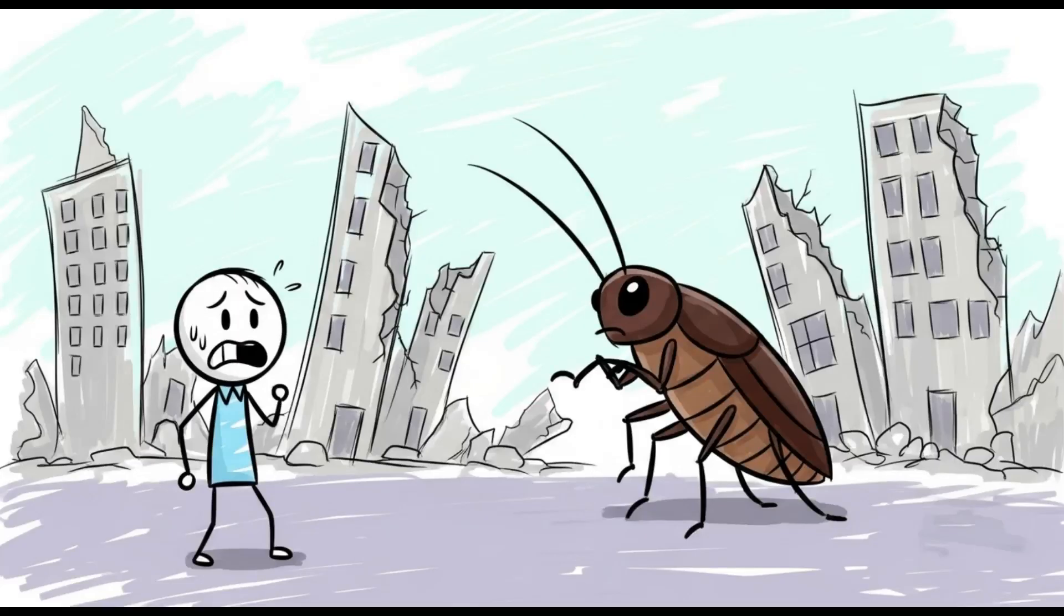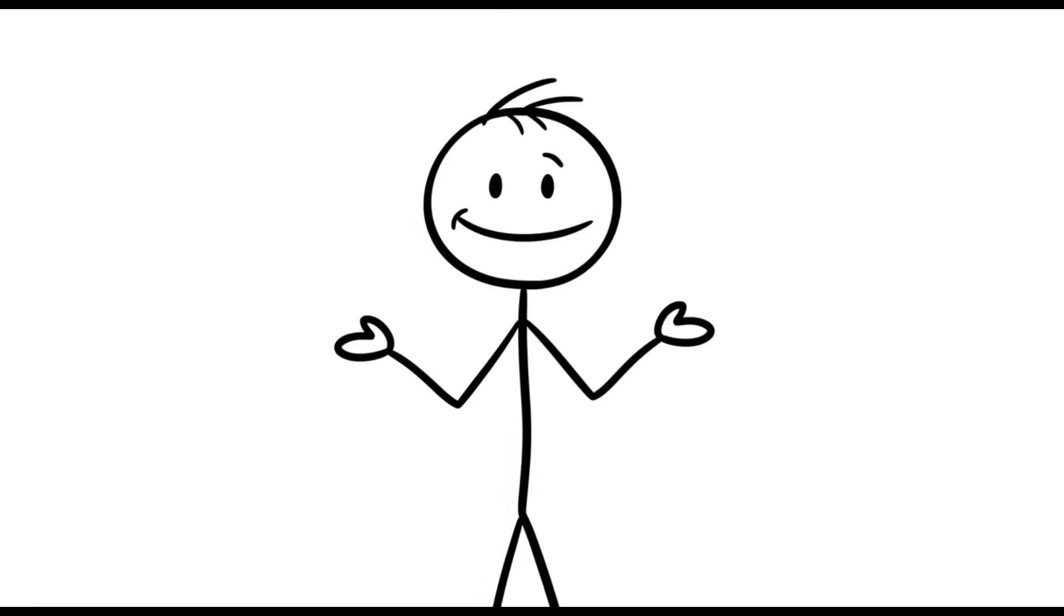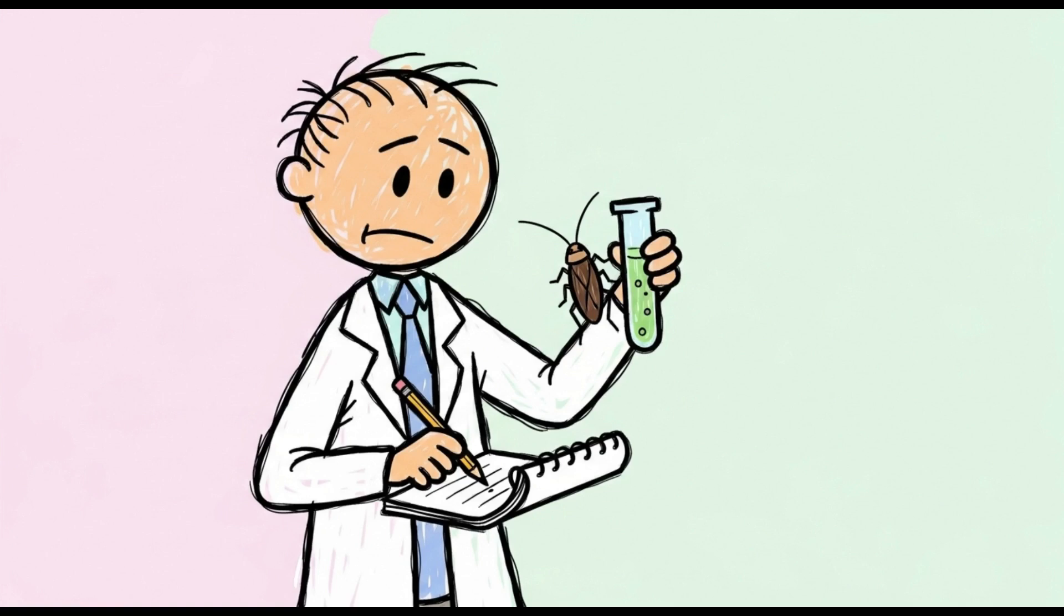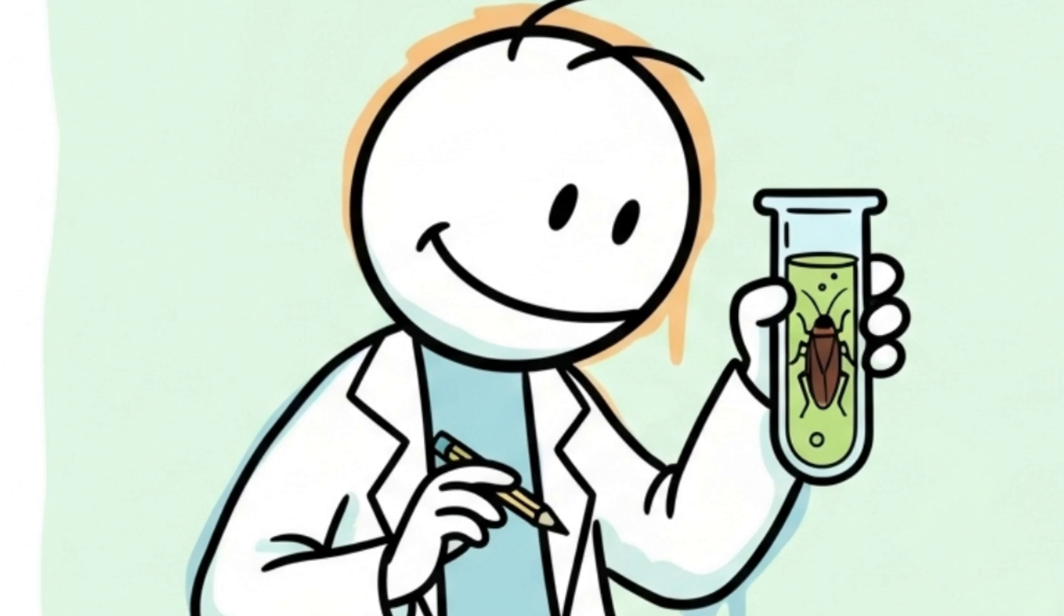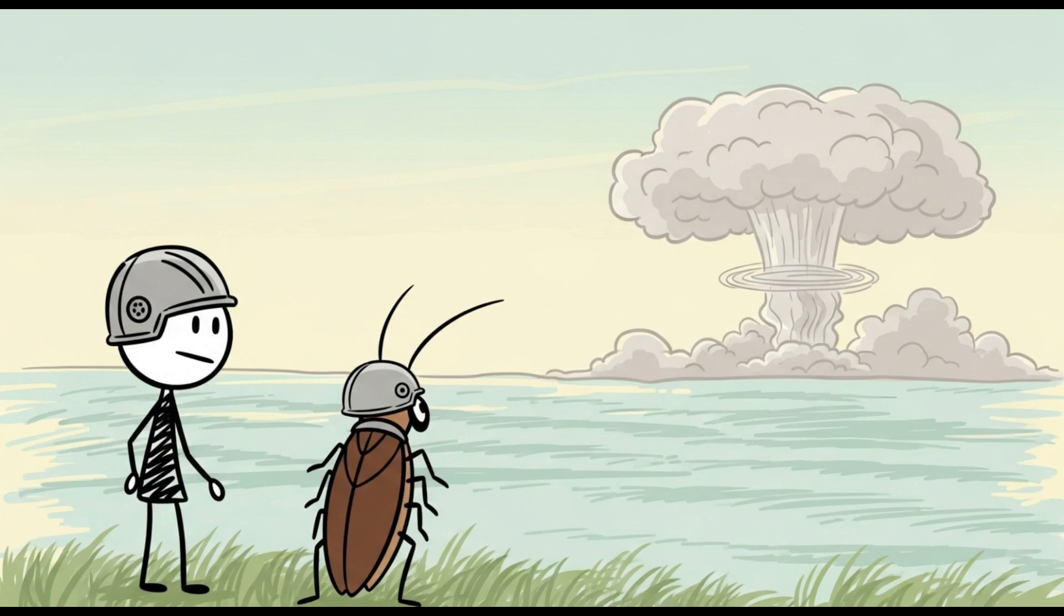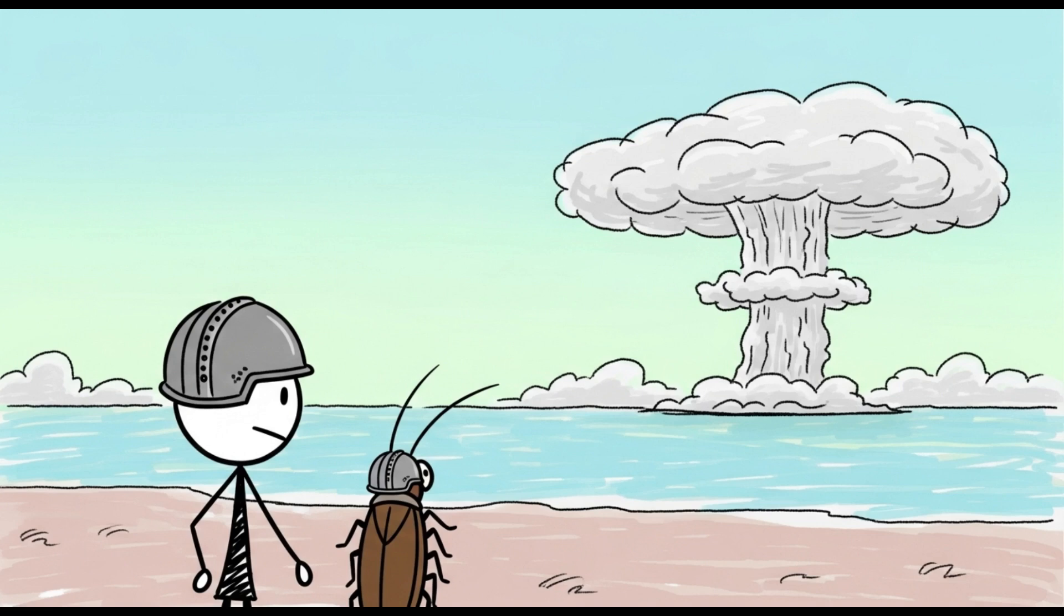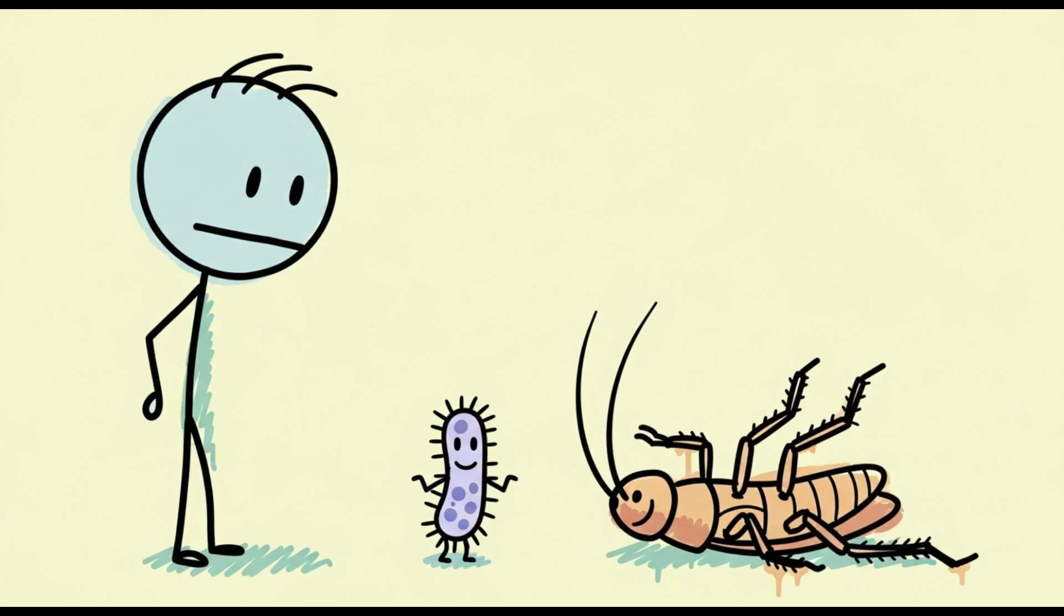Cockroaches survive a nuclear explosion. Movie scenario: cockroaches dancing in the ruins. Reality: they tolerate more radiation than humans, but they also die, and quickly, in the extreme heat of the explosion. The superpower is biological. They renew cells slowly. The damage appears later. Immortality, only in a meme. Those who dominate post-bomb are microorganisms, not insects with egos.